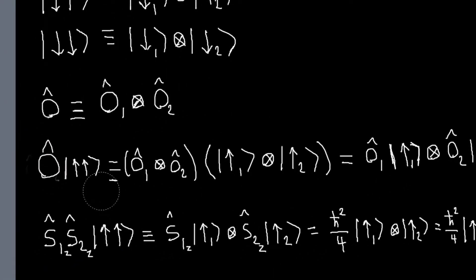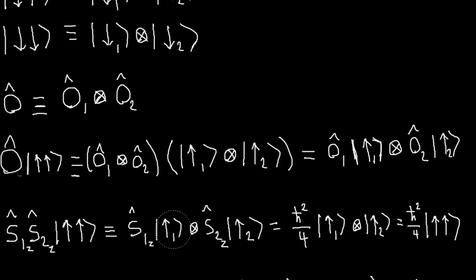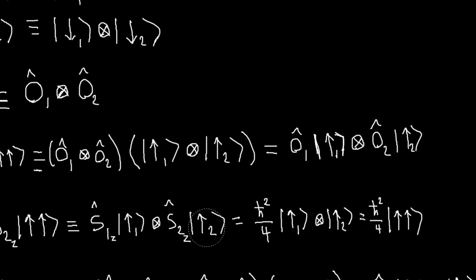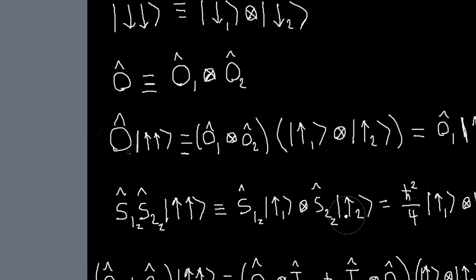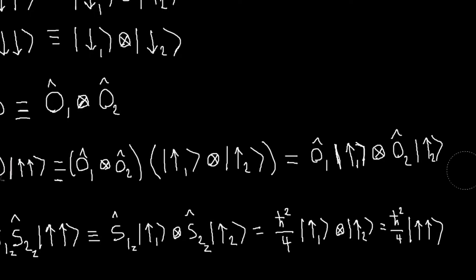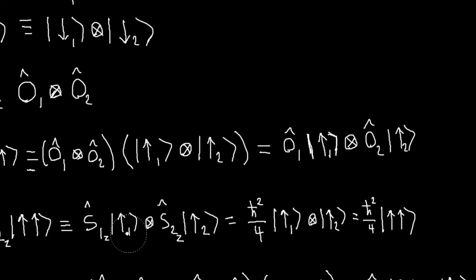For example, we could have the S1z operator times the S2z operator acting on the up-up state. What I really mean is the S1z operator acting on the first state, Kronecker product with the S2z operator acting on the second state. We know how to evaluate this: acting on the first up gives h-bar over two, acting on the second up gives another h-bar over two. So I get h-bar squared over four times the original up-up state. Notice we didn't really have to write out the Kronecker product to evaluate this — we could just say S1z acts on the up part and gives h-bar over two, S2z acts on the up part and gives another h-bar over two, so we get h-bar squared over four times the state.